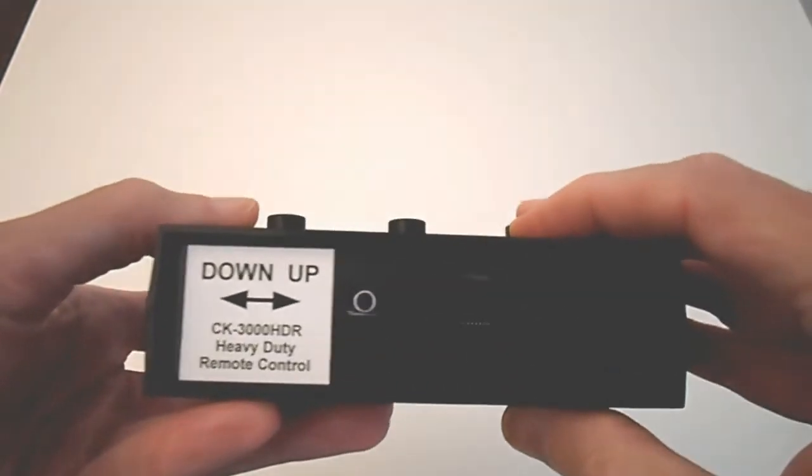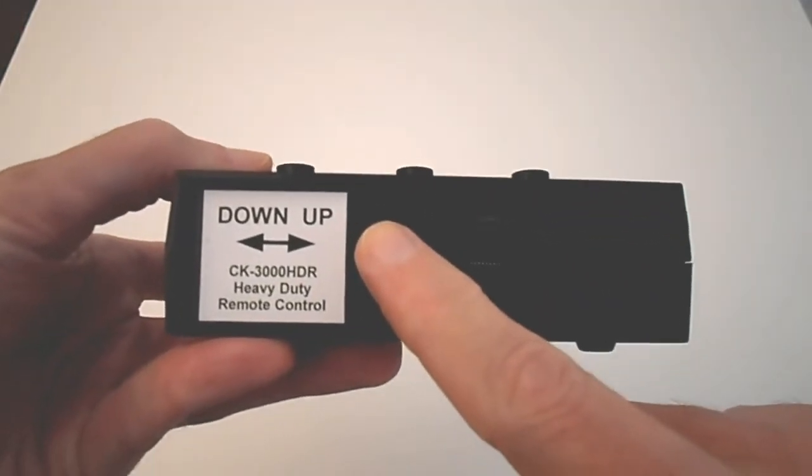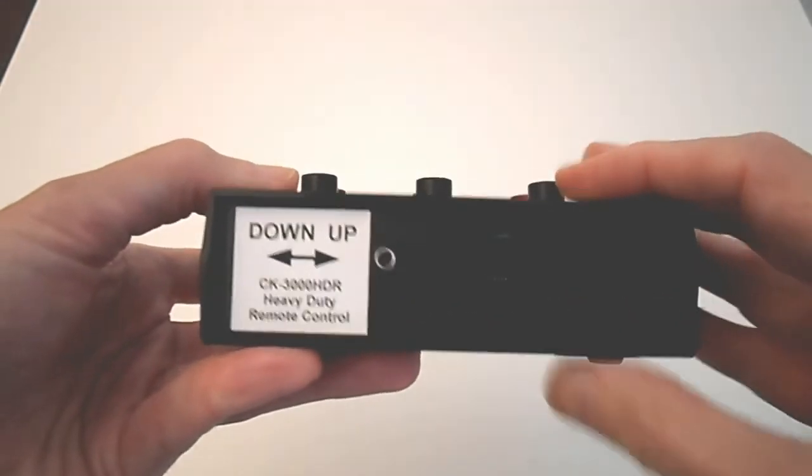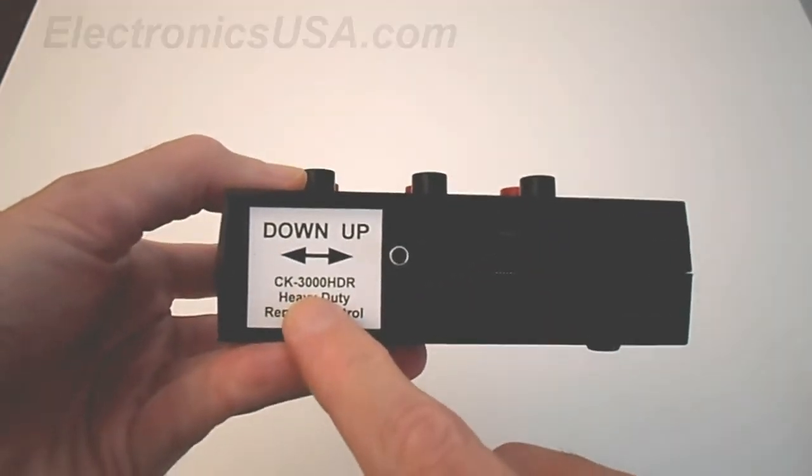Now, there's a toggle switch located right here for selection between up and down modes on the timer. And it's also clearly labeled.